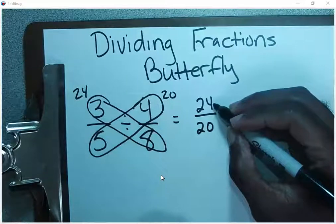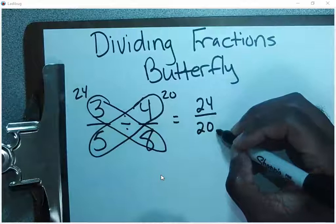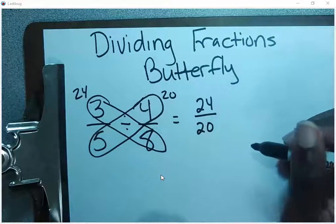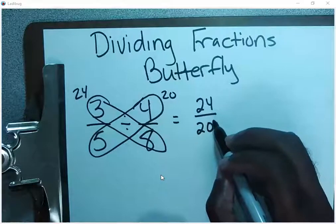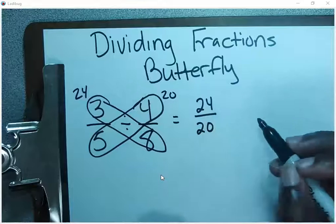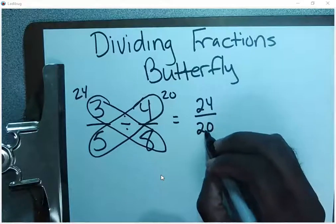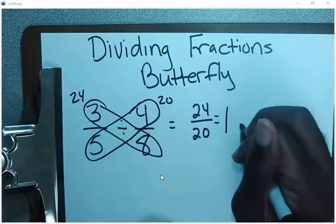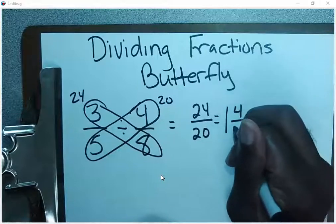Anytime your numerator is bigger than your denominator, that's called an improper fraction. So what we're going to do is convert this improper fraction into a mixed number. We do that by simply dividing our bottom into our top. So in reality, this will become one and four over 20.